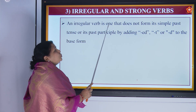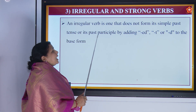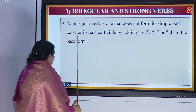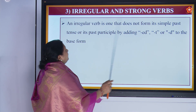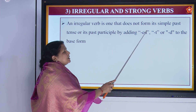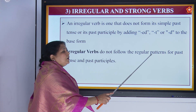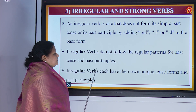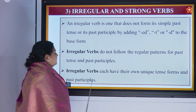An irregular verb is one that does not form its simple past tense or its past participle by adding ED, T or D to the base form. Irregular verbs do not follow the regular pattern of past tense and past participle. Irregular verbs each have their own unique tense forms and past participles.